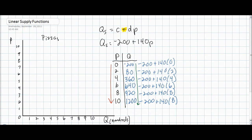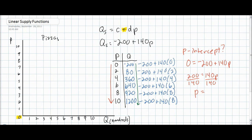Using the information from our supply schedule, we can derive a supply curve. However, we have a problem: usually on a supply and demand diagram, we do not show negative values on the quantity axis. Supply and demand diagrams typically start at the origin, or zero. So what we need to find is where our supply curve intersects the price axis and therefore begins to slope upwards. To do this, we must solve for the P intercept — in other words, where the supply curve intercepts the vertical axis. The P intercept occurs where the quantity supplied is equal to zero. Therefore, we set zero equal to negative 200 plus 140P. Once we simplify this equation, we see that the P intercept — the price at which quantity supplied equals zero — is exactly $1.43.